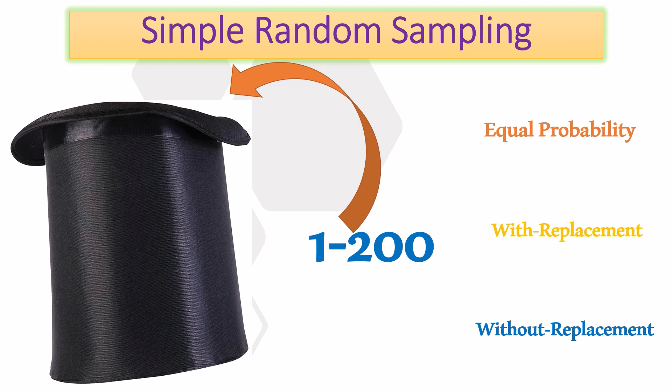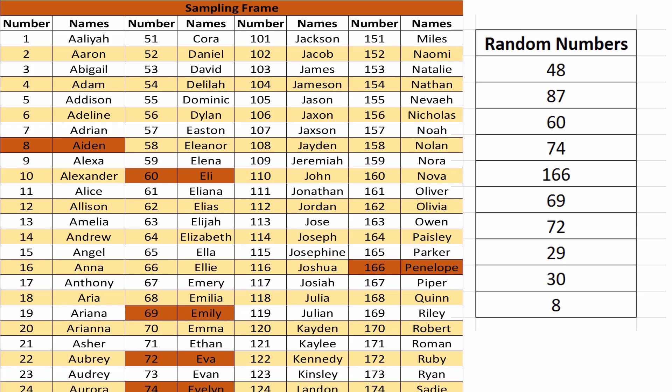If we put back the number in the hat after picking a number, then it will be with replacement method. Obviously this may give us the same name repeatedly. If we don't put the selected number back before our next pick, then this will be without replacement method.